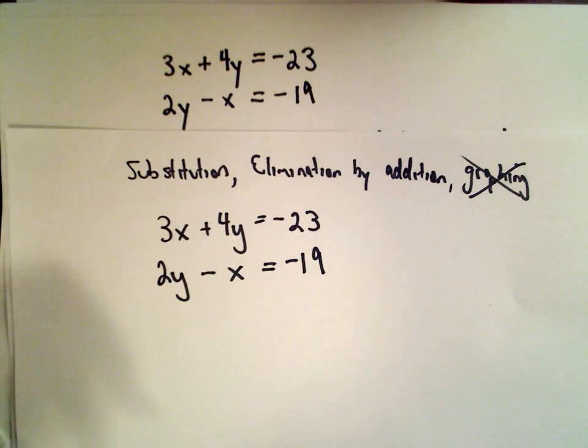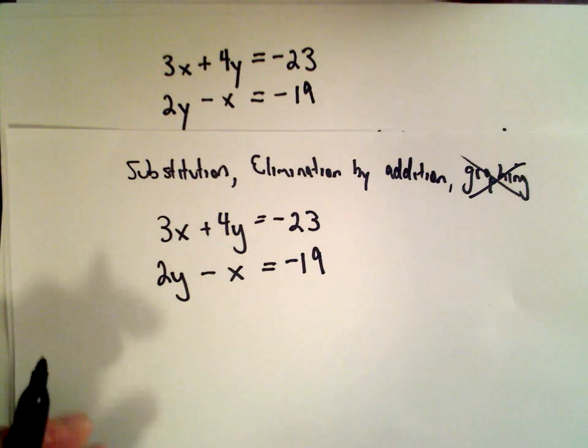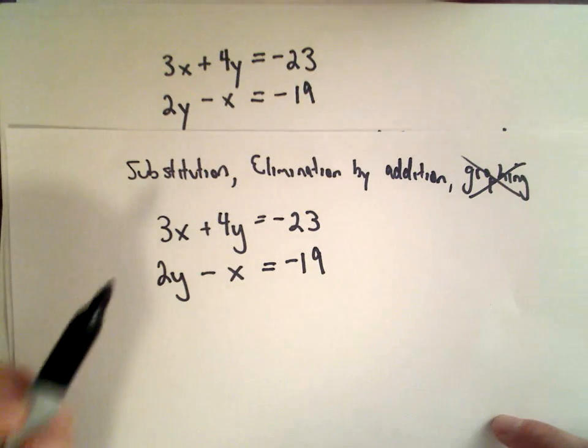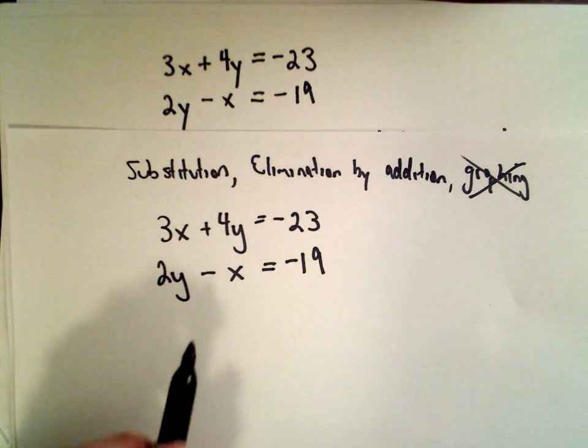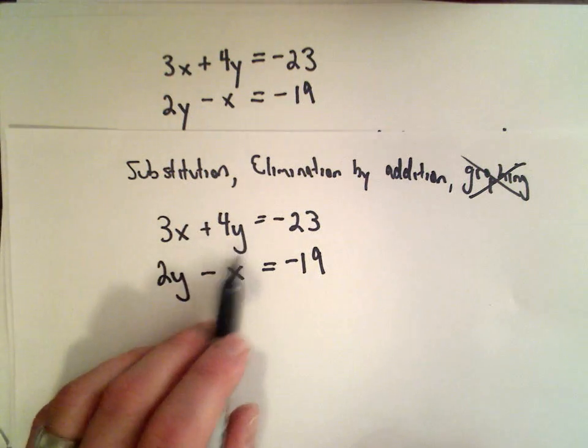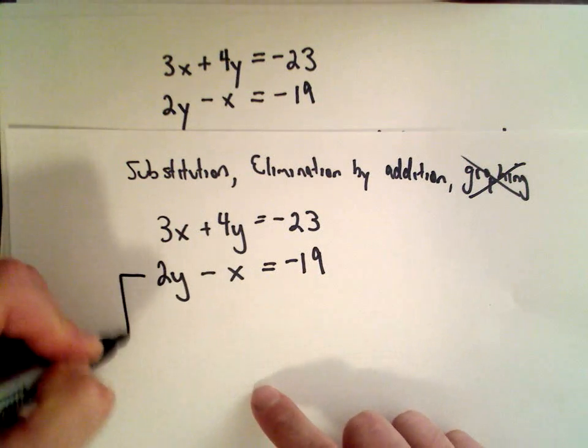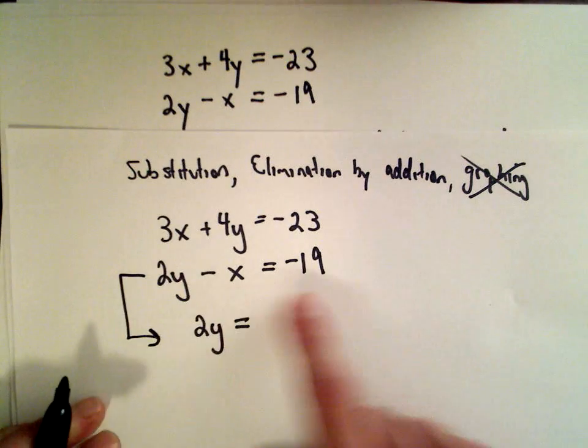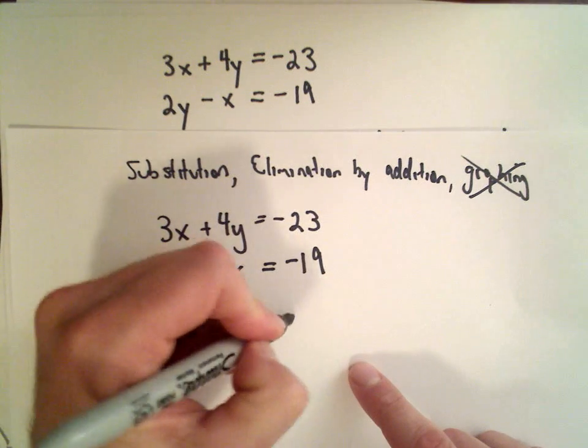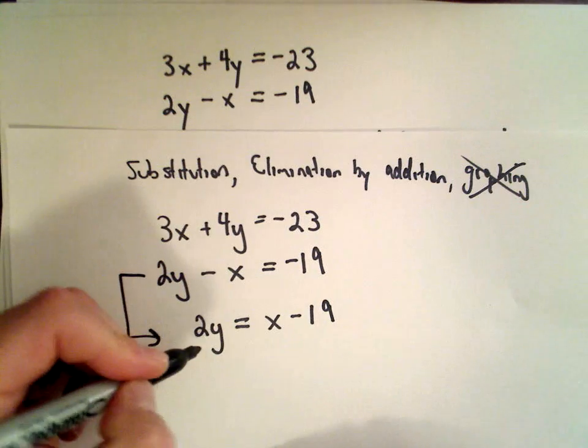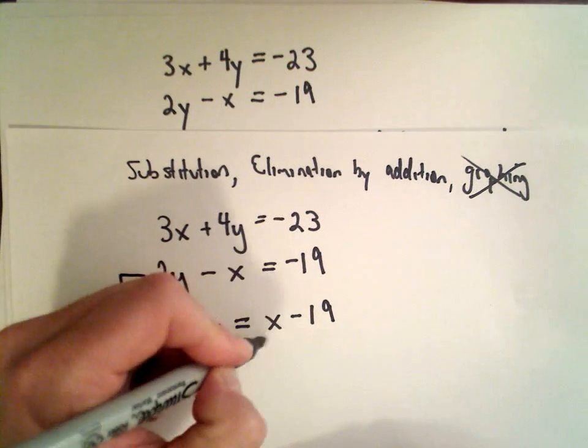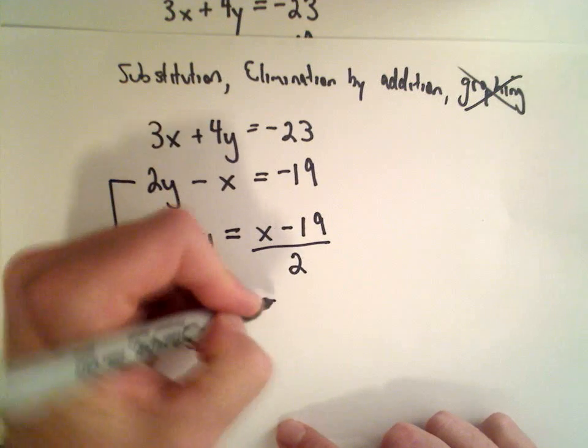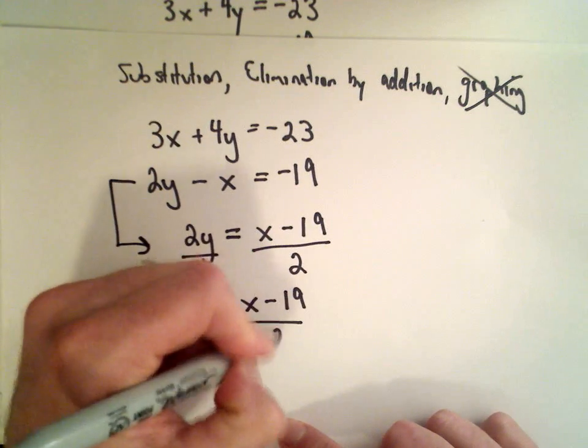I want to get an equation that involves only x, which means I want to get rid of y. So I'm going to take the second equation and solve for y. I would have 2y equals—I'm going to add x to both sides—so x minus 19. Then I would divide both sides by 2, and I have y equals x minus 19 divided by 2.